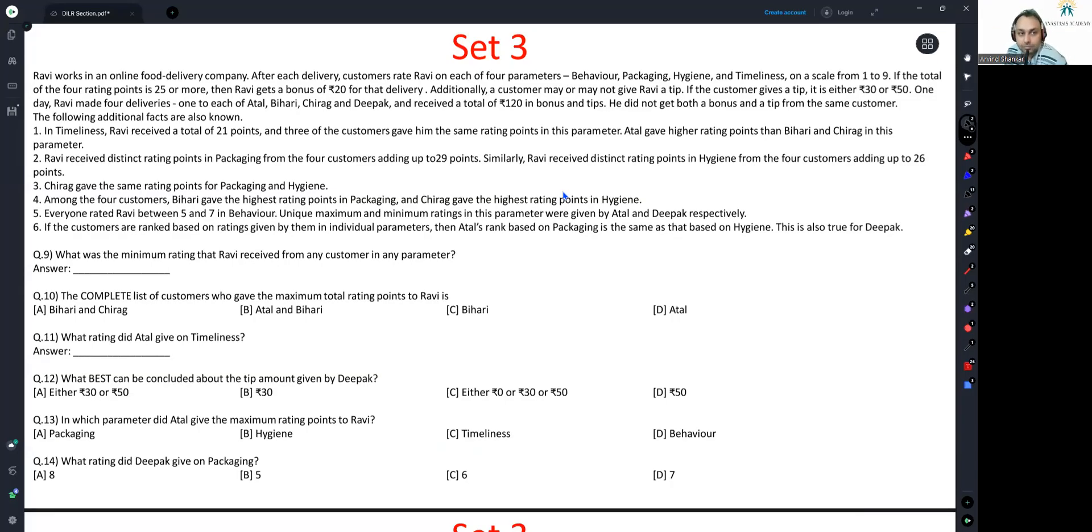Let's look at set 3. Ravi works in an online food delivery company. After each delivery, customers rate Ravi on each of four parameters: behavior, packaging, hygiene, and timeliness, on a scale from 1 to 9. If the total of the four rating points is 25 or more, then Ravi gets a bonus of 20 rupees for that delivery.